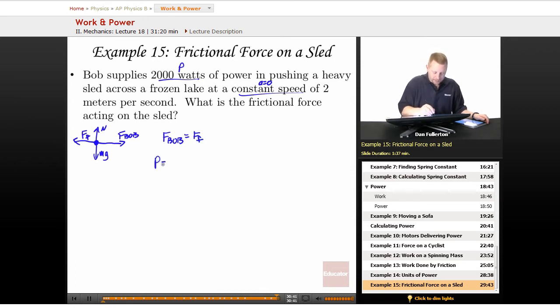And if power is force times velocity, then we could say that the force of Bob must be equal to the power over the velocity, or 2,000 watts over 2 meters per second, which is going to give us 1,000 newtons as the force of Bob.